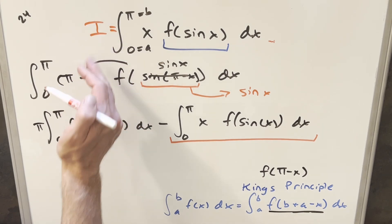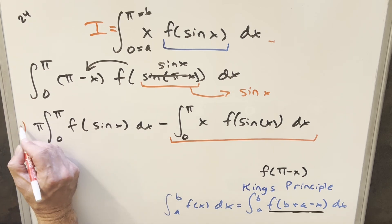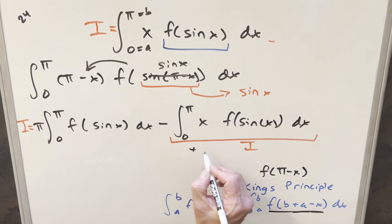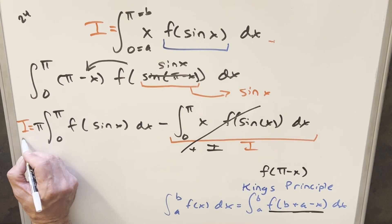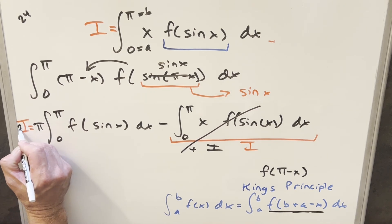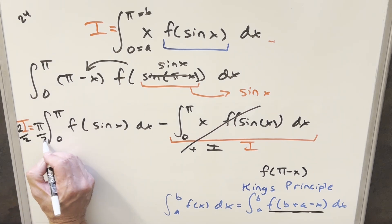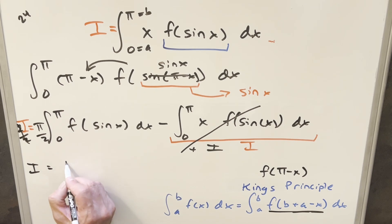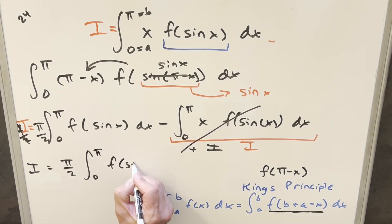I'll put a label on the original integral — we'll call it i. So everything here is i, and this second integral is another copy of i. To simplify, we add a copy of i to both sides. On one side this cancels off, and on the other side this becomes 2i. Dividing both sides by 2, our i equals pi over 2 times the integral from 0 to pi of f of sine of x.